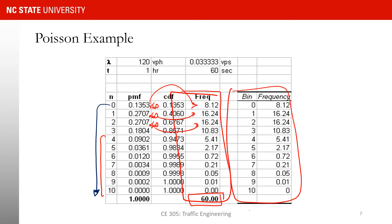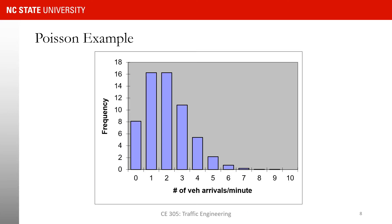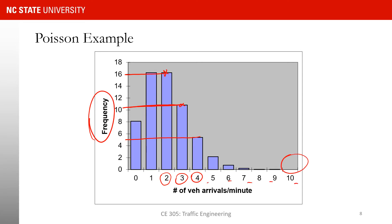Drawing the histogram: we expect 8 intervals with zero vehicles, 16 intervals with one vehicle, 16 with two, about 10.5 with three, 5 with four, and so on. By n=10 we expect essentially no intervals with that many vehicles. This is how Poisson distribution gives us the distribution of vehicle arrivals across one-minute time intervals.